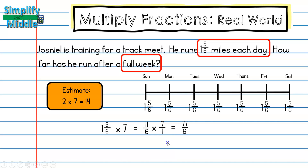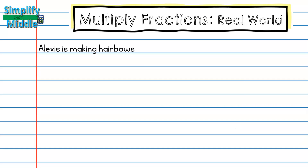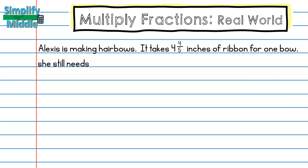I get seventy-seven sixths. Dividing seventy-seven by six, I end up with twelve and five-sixths. That's pretty close to my estimate of fourteen, so my answer makes sense. Joe Snell will have run twelve and five-sixths miles. Our next problem: Alexis is making hair bows.